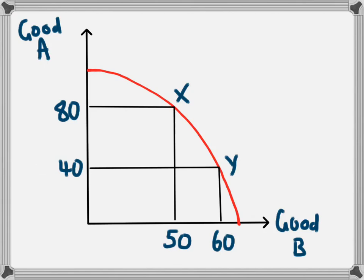If we were to go in reverse and say that the economy is moving from Y to X, it is gaining 40 of good A. The opportunity cost of increasing from 40 to 80 is 10 of good B.